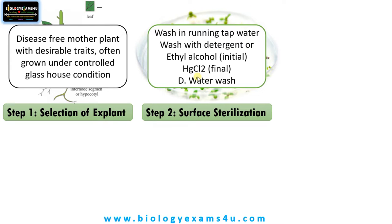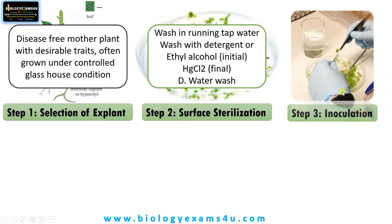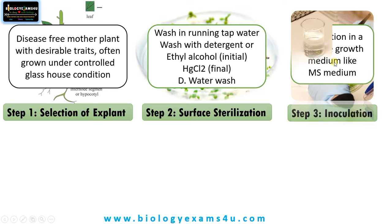Then we trim the explant to remove the edges that had direct contact with mercury chloride, as mercury chloride is toxic and causes cell death, ensuring we have live cells. This is followed by inoculation — the explant is properly trimmed and then, inside the laminar air flow, it is inoculated into a suitable medium like MS medium, White's medium, etc.